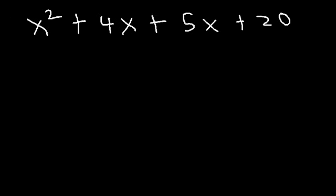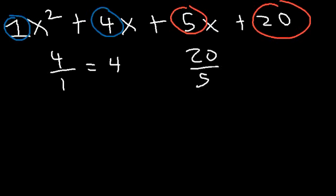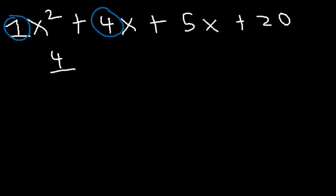Here's how you can tell: what is 4 divided by 1? 4 divided by 1 is 4. And what is 20 divided by 5? 20 divided by 5 is 4. So if the first two coefficients have the same ratio as the last two coefficients, then you can factor by grouping. That's a quick way to tell if this technique is going to work.